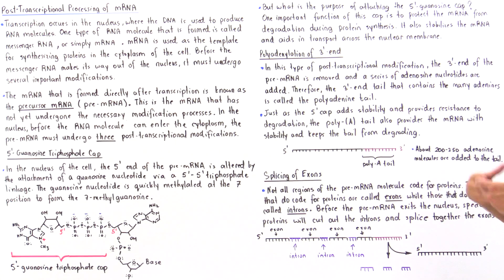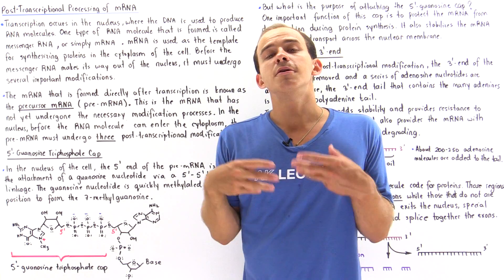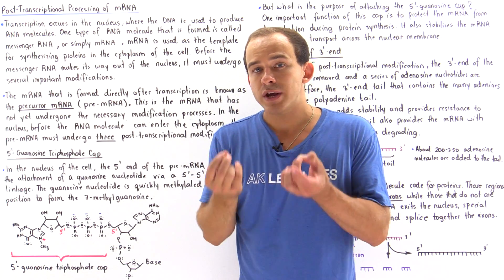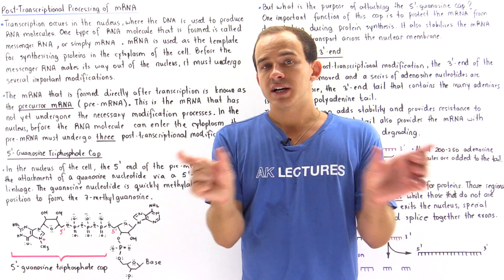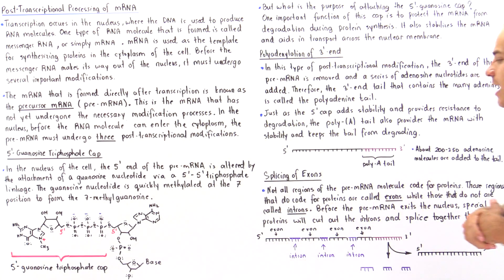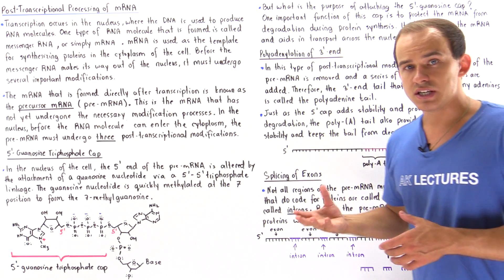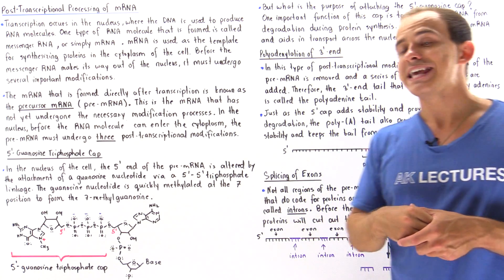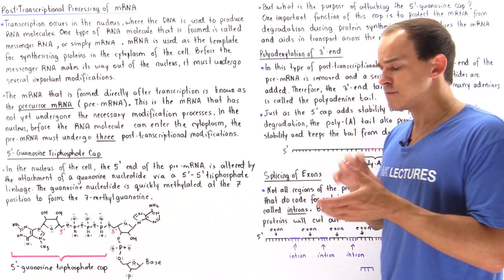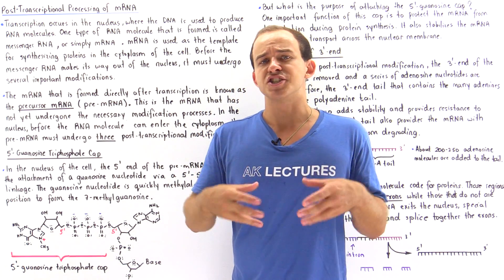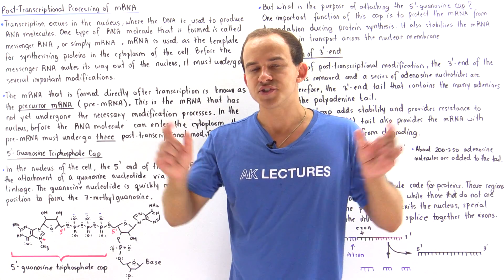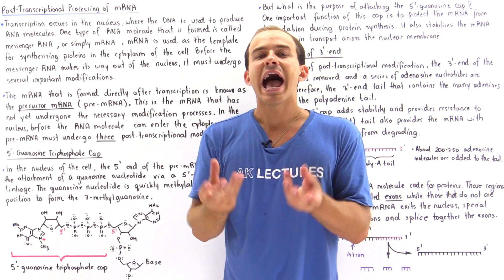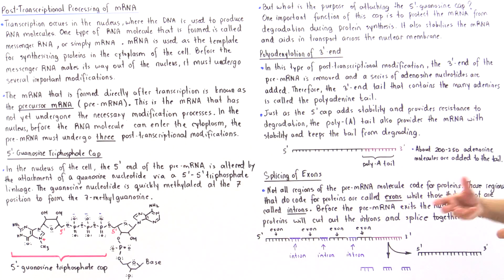The final type of post-transcriptional modification is known as the process of splicing. We remove regions known as introns and combine the regions known as exons. Not all regions of the pre-mRNA molecule code for our protein. Those regions that do code for proteins are known as exons, and those that do not are known as introns. Special enzymes together known as the spliceosome remove our introns and splice together our exons to form the final mRNA molecule.